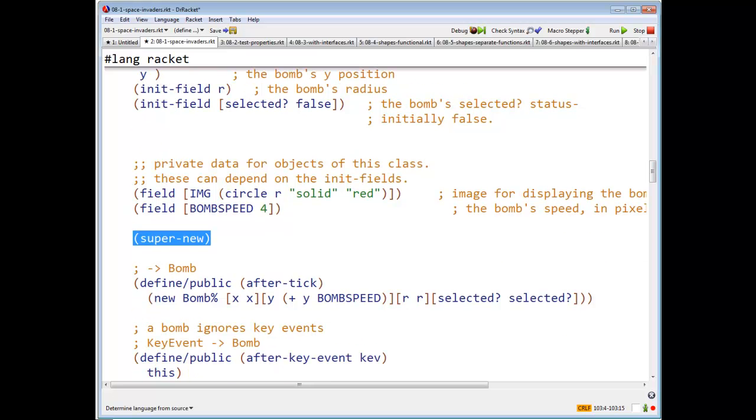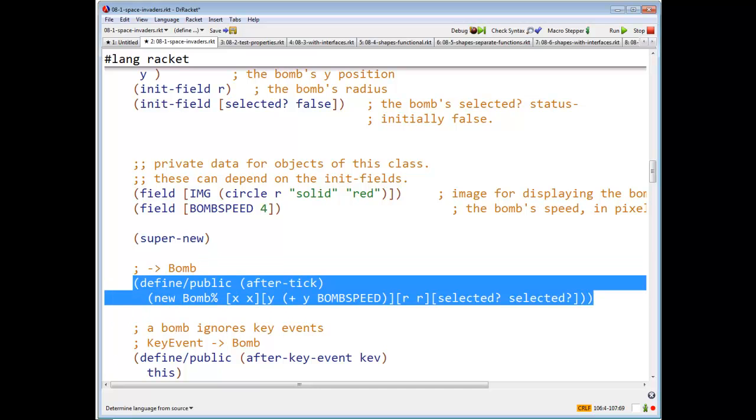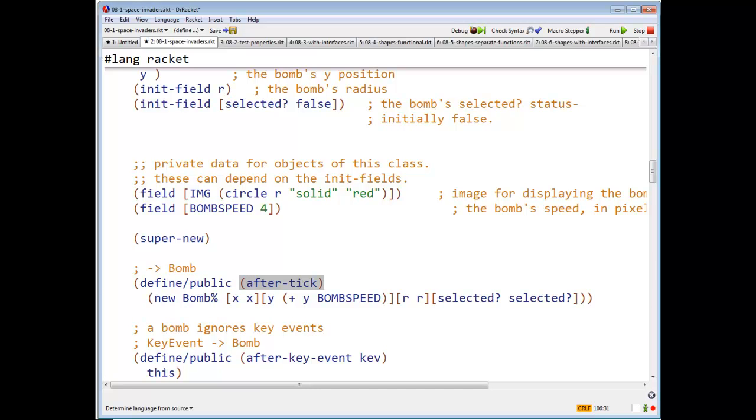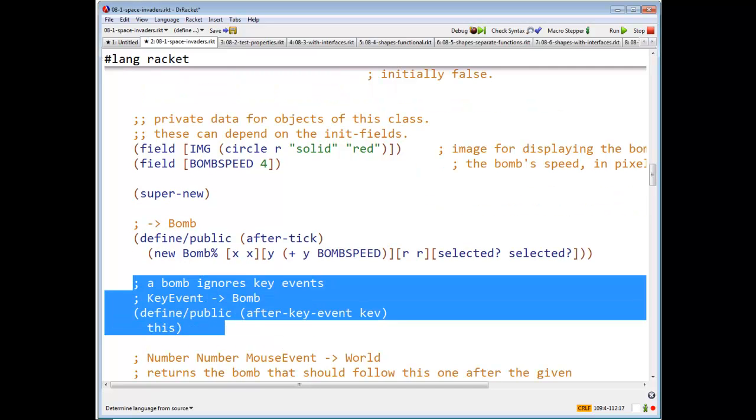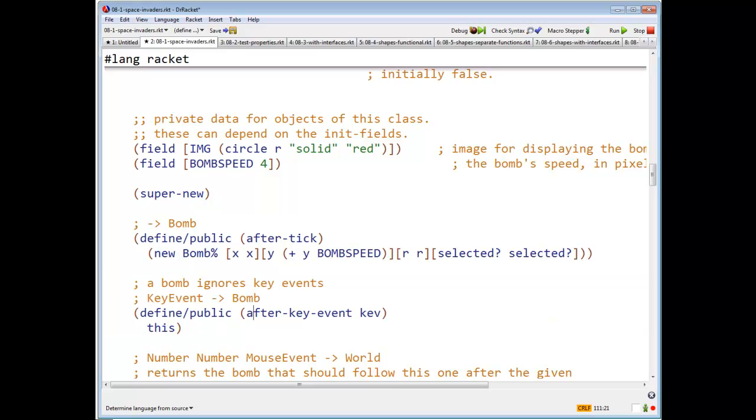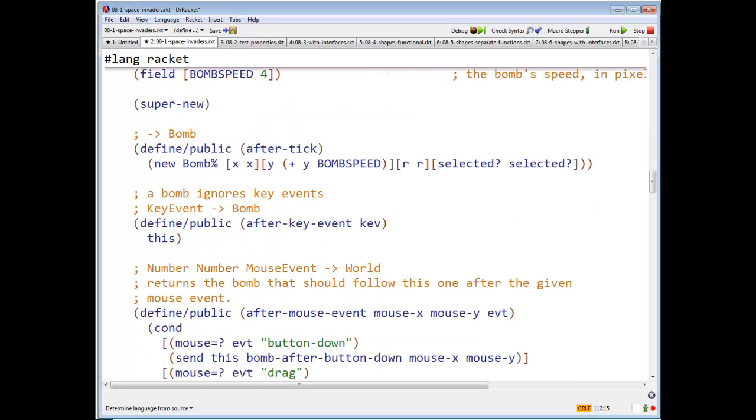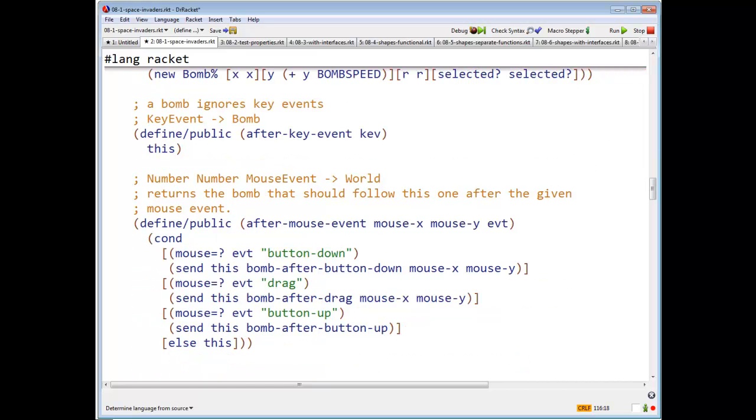There's super new, there's our standard magic incantation. Here's after tick, says what happens after a tick? I return, it's supposed to return the next BOM, so we got a new BOM, X is the same, Y is going to be Y plus BOM speed, and the other fields are unchanged. A BOM ignores key events. So if you ask a BOM what should you be after a key event, the answer is I should be this BOM again.